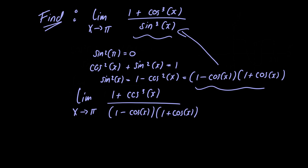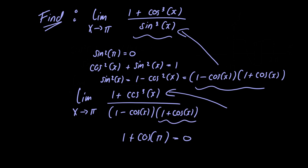Now we still have a problem because 1 plus cosine of pi is equal to 0, so we're still dividing by 0. We want to try to rewrite the numerator so that we can get a factor of 1 plus cosine of x, so that we can cancel that with the 1 plus cosine of x in the denominator. That will allow us to let x equal pi.